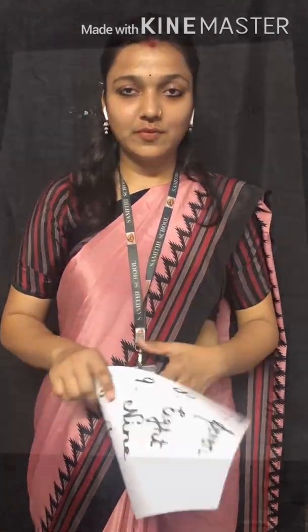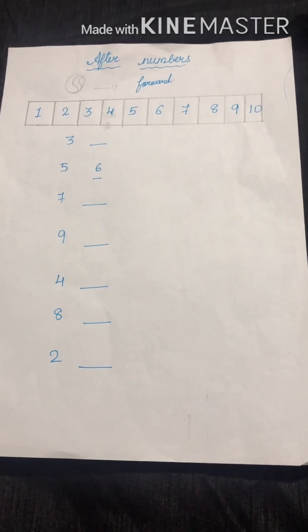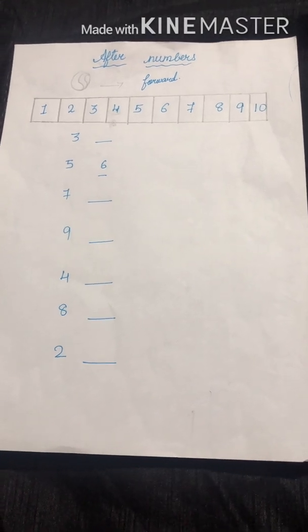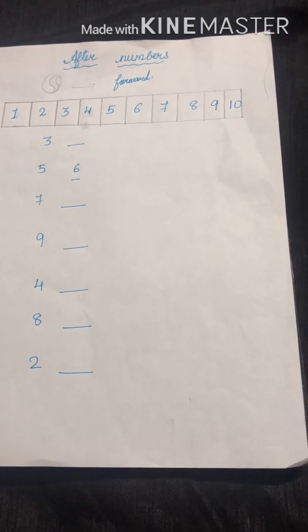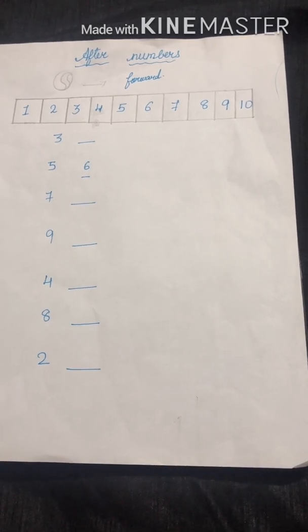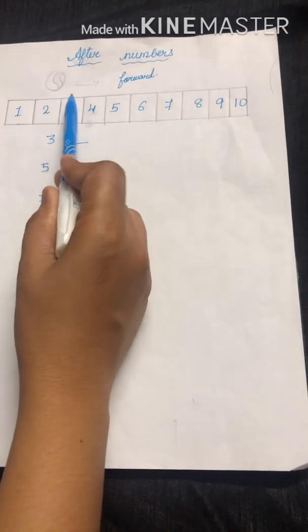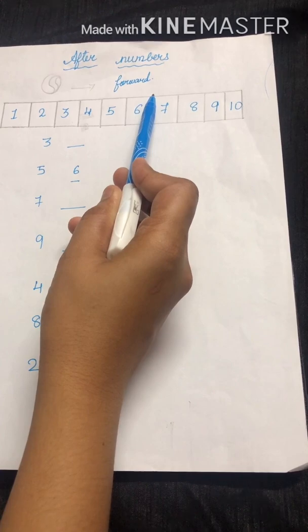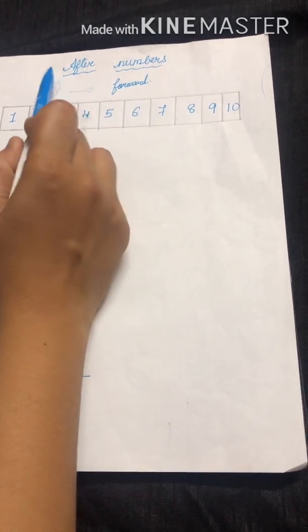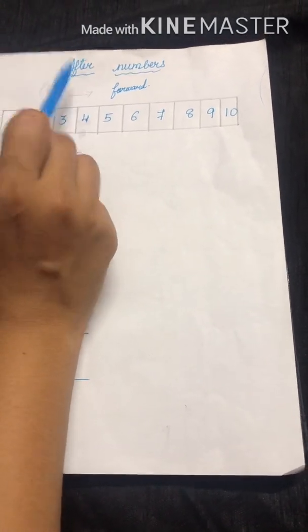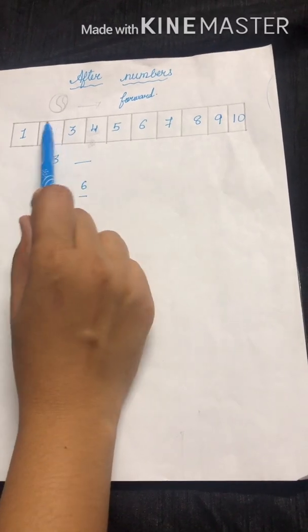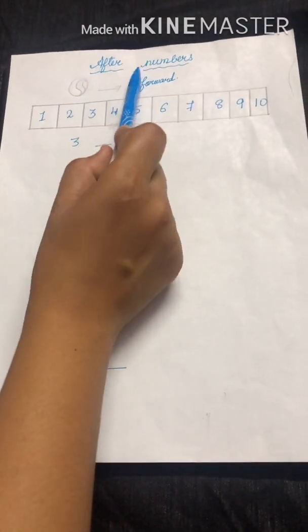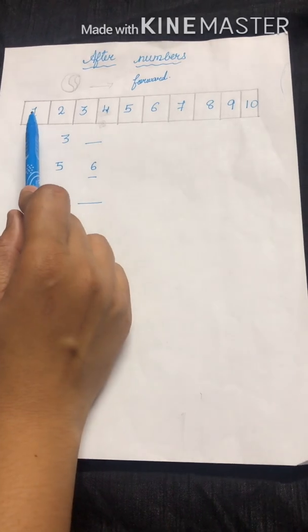Thank you. Now we are going to study the concept of after and before number. Students, let's understand it with the help of a ball. When the ball moves forward, it is called after number. Remember it.